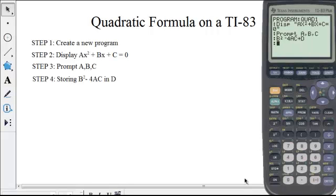The next step is to store b squared minus 4ac into d. This step will make the next two steps a lot easier. The store button is found above the on switch on the bottom left hand portion of your calculator.